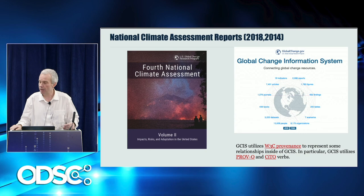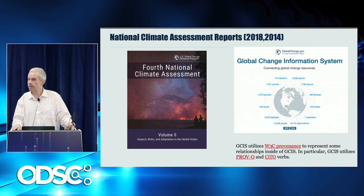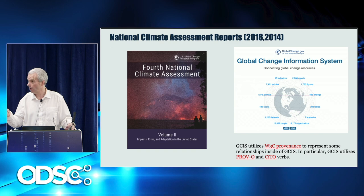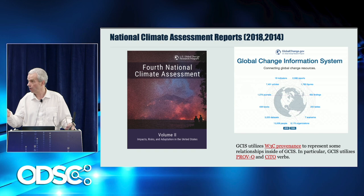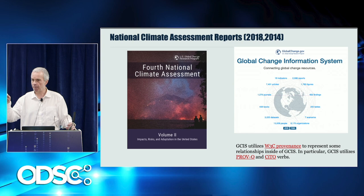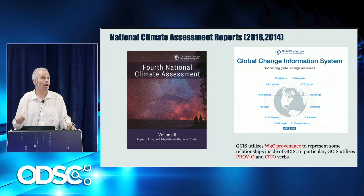Let me give you an example of how those principles standardized at W3C can be deployed in a real application. The National Climate Assessment Report is a series of reports produced by the US government — they produce one every four or five years. The last edition was 2018; the previous one was 2014, and in 2014 they decided to provenance-enable that report. Not only is there a PDF version, but also an online browsable version based on an information model called the Global Change Information System, which is based in part on the standards we defined at W3C PROV.